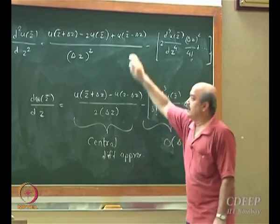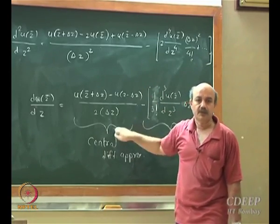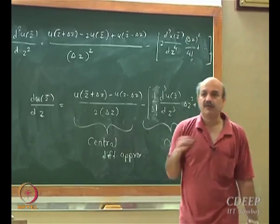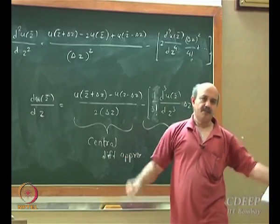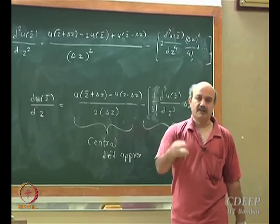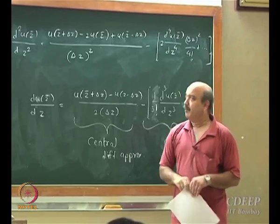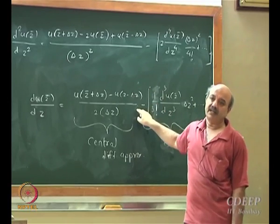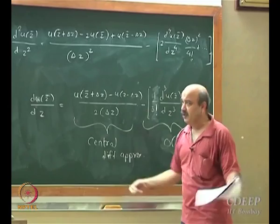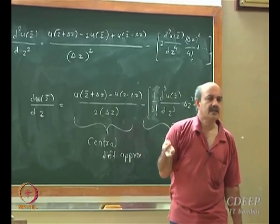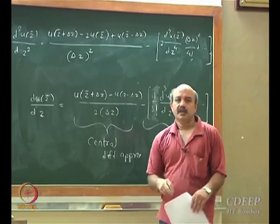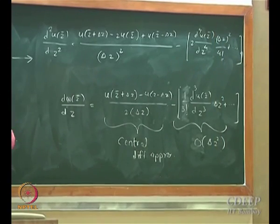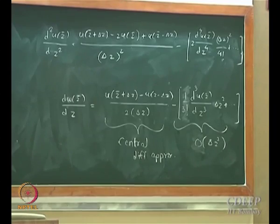The order of approximation in the central difference for the first derivative and the second-order derivative approximation are identical — both O(δz²). We prefer to use these two together. We normally do not use the first-order forward or backward difference approximation except at some boundary points, which we will address later. How do we use this to solve a boundary value problem? Let us go to that.